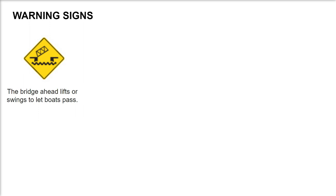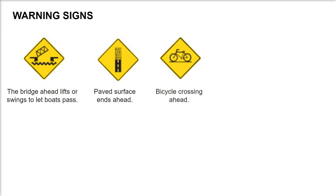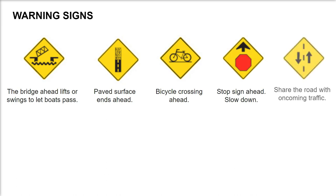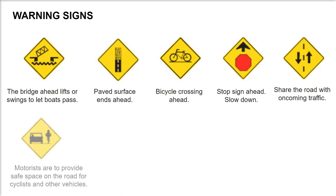Chevron arrowhead signs are posted in groups to guide drivers around sharp curves in the road. Winding road ahead. The bridge ahead lifts or swings to let boats pass. Paved surface ends ahead. Bicycle crossing ahead. Stop sign ahead — slow down.